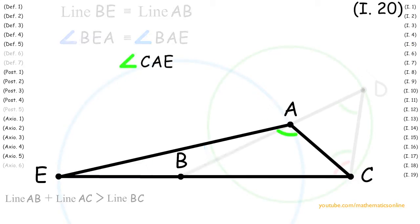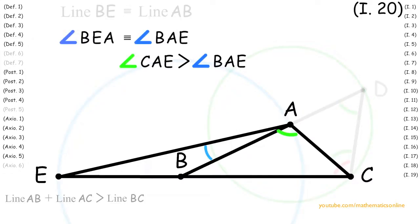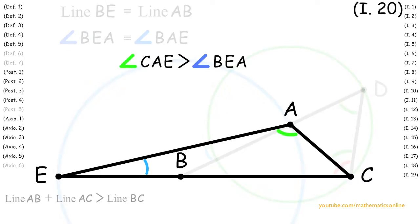Next, looking at angle CAE, by Axiom 5 it is greater than angle BAE. Now since we also have that angle BEA is congruent to angle BAE, then angle CAE is also greater than angle BEA. Now since angle CAE and angle BEA are angles of triangle ACE, then by Proposition 19, line CE is greater than line AC.